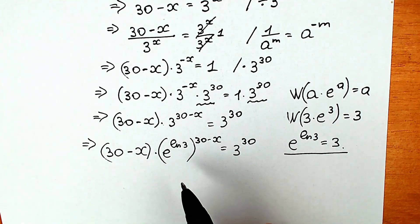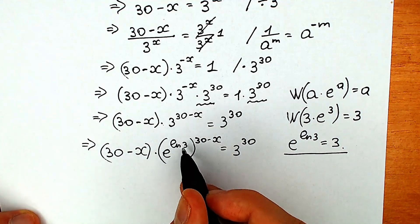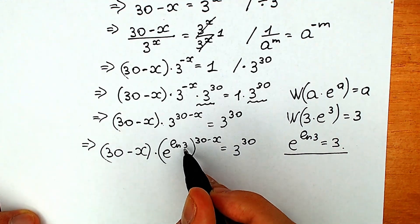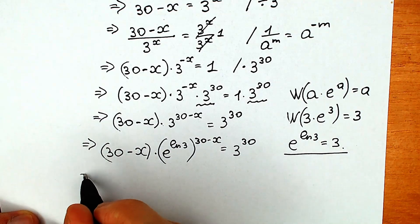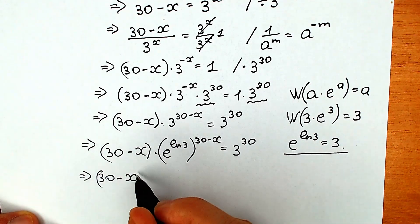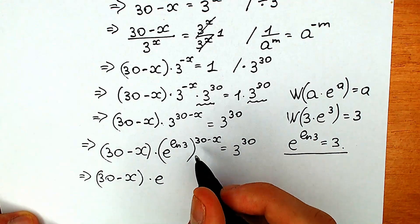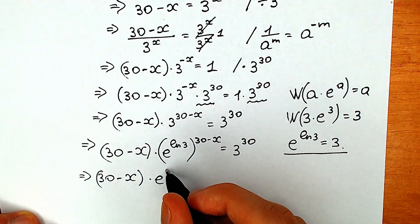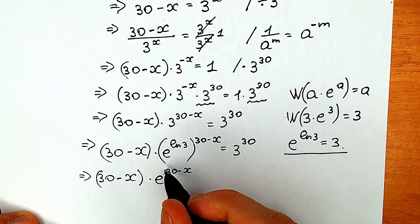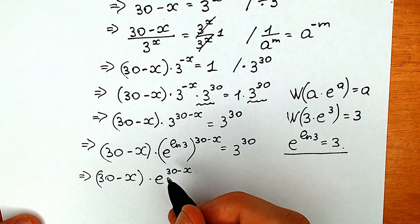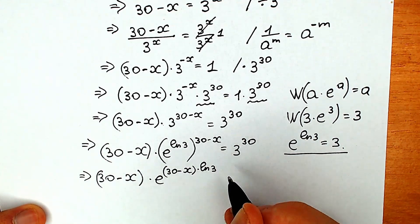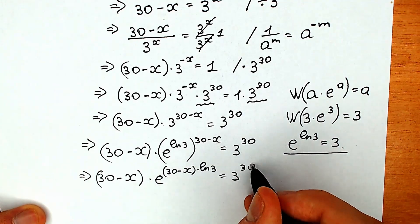We need to multiply the powers: raising e to the power (natural log 3) to the power (30 minus x) means we multiply natural log 3 and 30 minus x. So we get 30 minus x times e to the power (30 minus x times natural log 3) equal to 3 to the power 30.